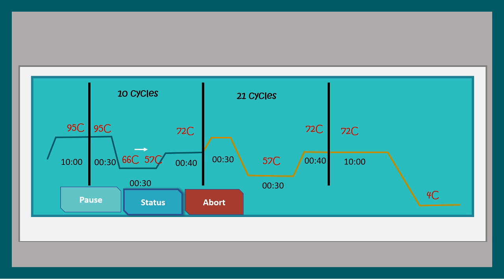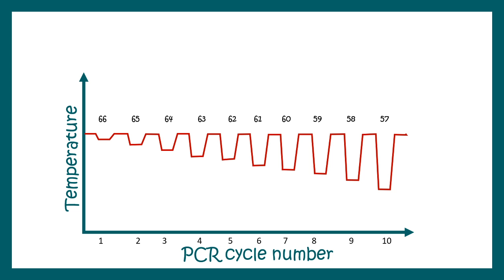The main step is these initial 10 cycles — each cycle reduces the temperature by, let's say, 1 degree. By the 10th cycle, the PCR reaches its optimal temperature for primer annealing.